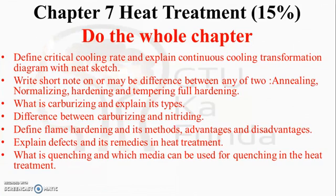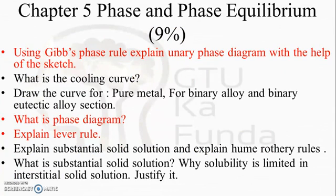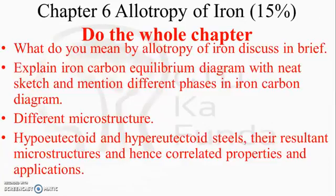I repeat: do the whole chapters on Allotropy of Iron and Heat Treatment thoroughly, because there will be two to four questions from these chapters worth 21 to 28 marks in the GTU exam. For passing purposes, these two chapters are very important. Also cover Phase and Phase Equilibrium, which carries another seven-mark question. By doing these three chapters well, you can pass the exam easily.